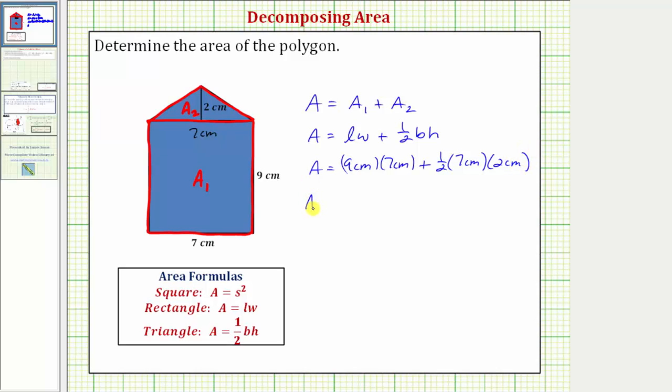So we have the area is equal to, well nine times seven is sixty-three, so the area of the rectangle is equal to sixty-three square centimeters. Notice how we get square centimeters because we're multiplying centimeters times centimeters.